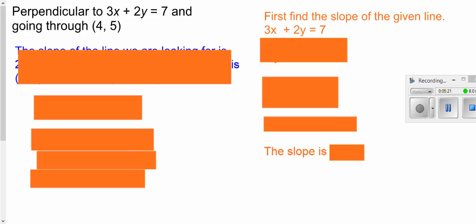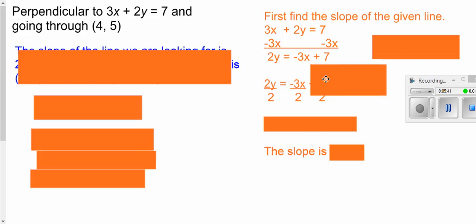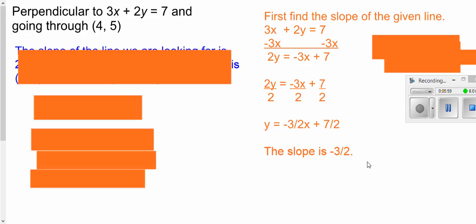So you want to find the equation of a line that's perpendicular to this one and going through this point. So the first thing you need to do is find the slope of the line that you're given. So to do that I need to get it in the form of y equals mx plus b so I need to get y by itself, so I'm going to subtract my 3x from both sides. Now I'm going to divide everything by 2 and I get y equals negative 3 halves x plus 7 halves. Now when y is on one side by itself the number in front of x is your slope. So I get this to be my slope of my given line but it says it's perpendicular.